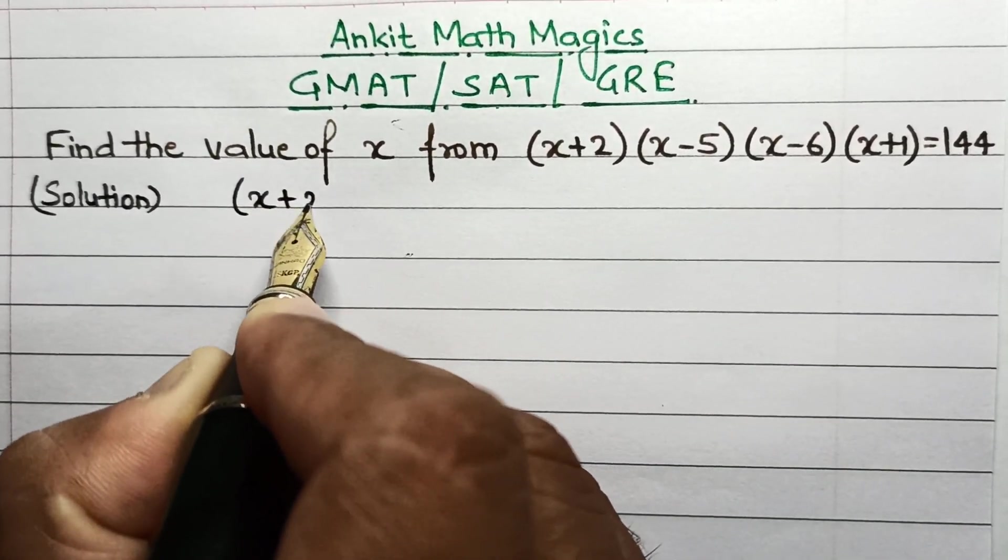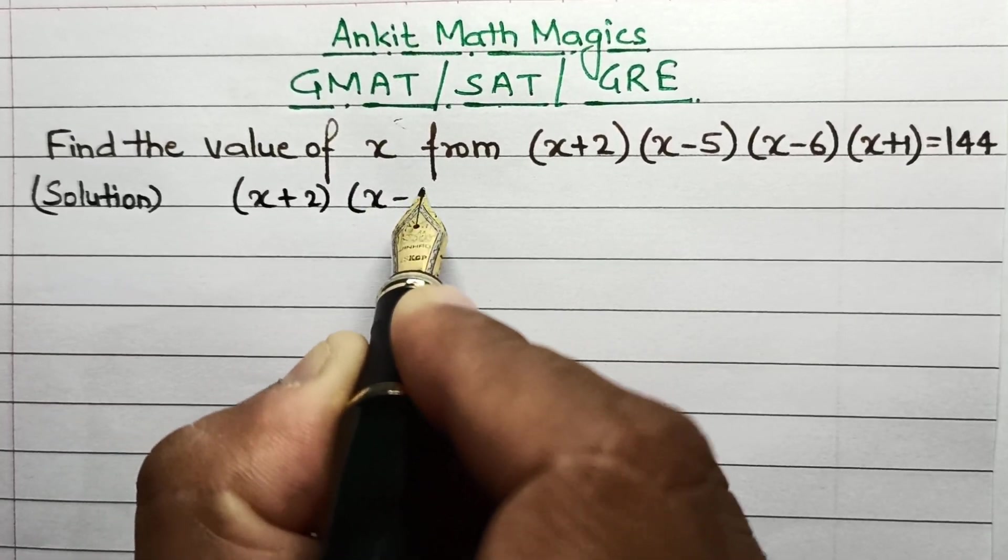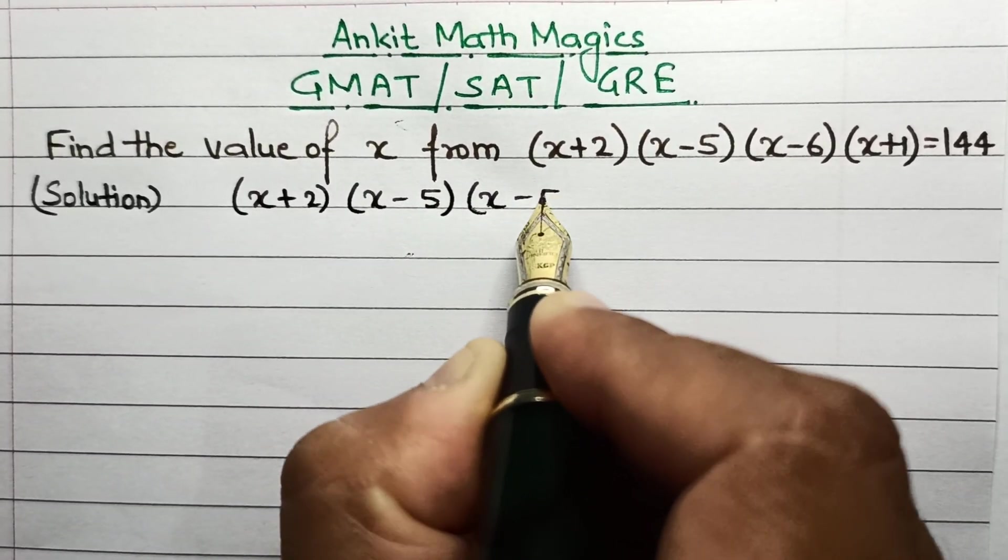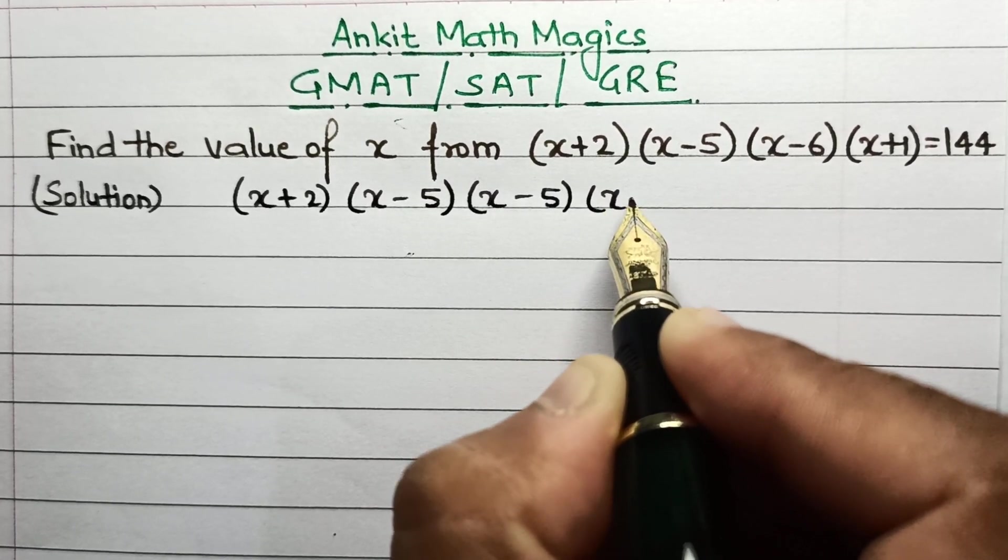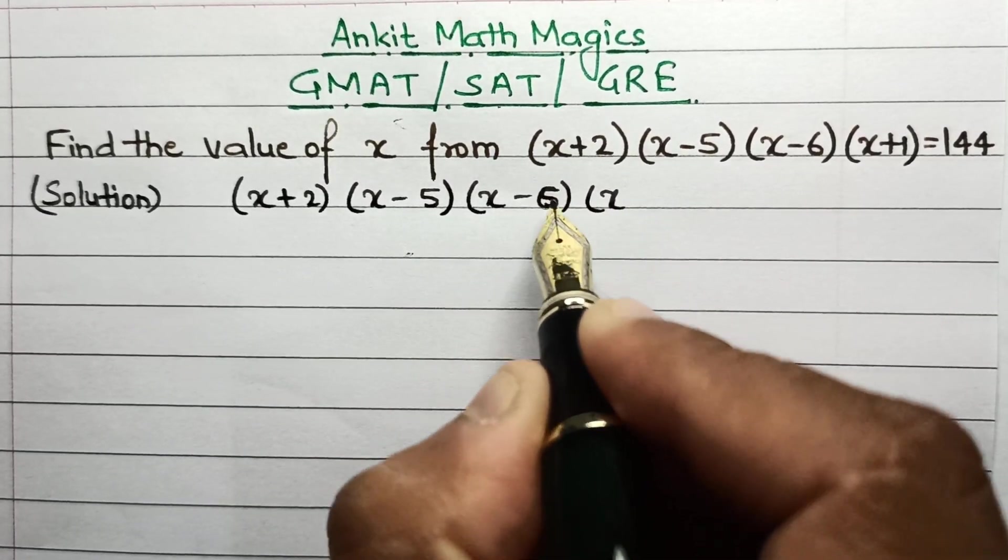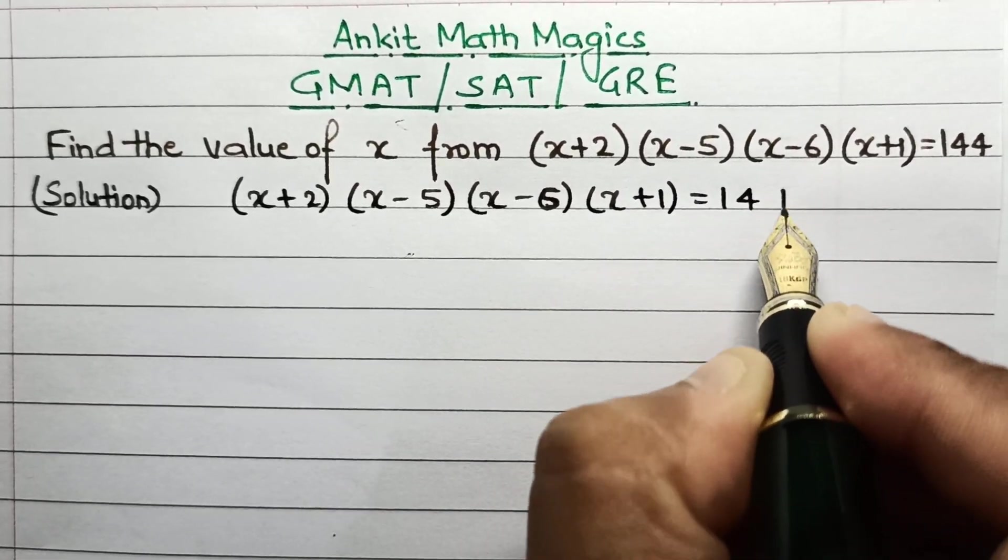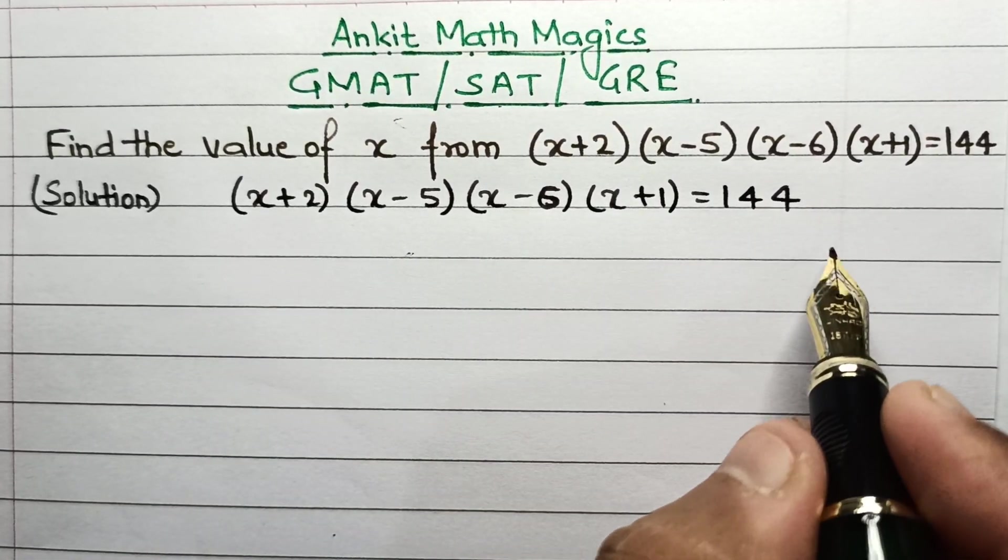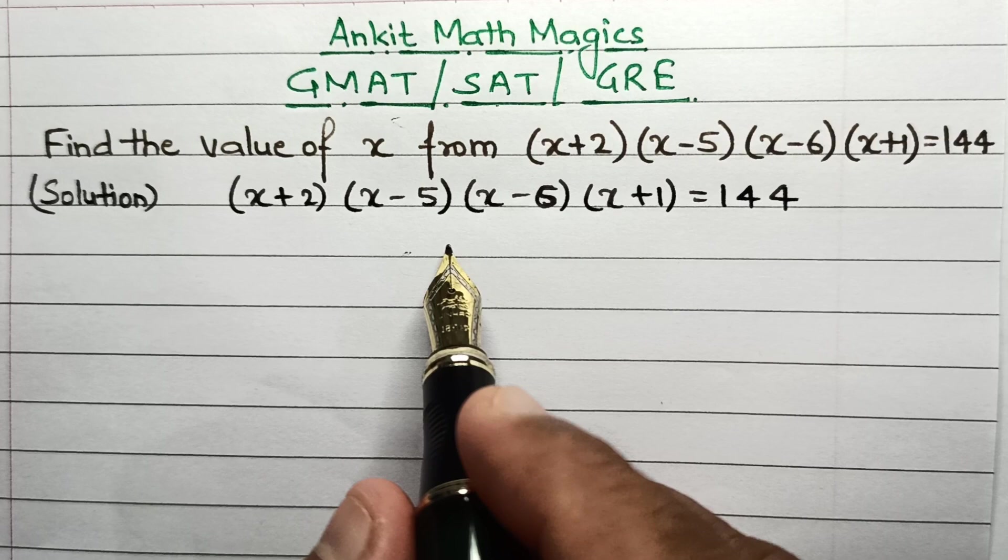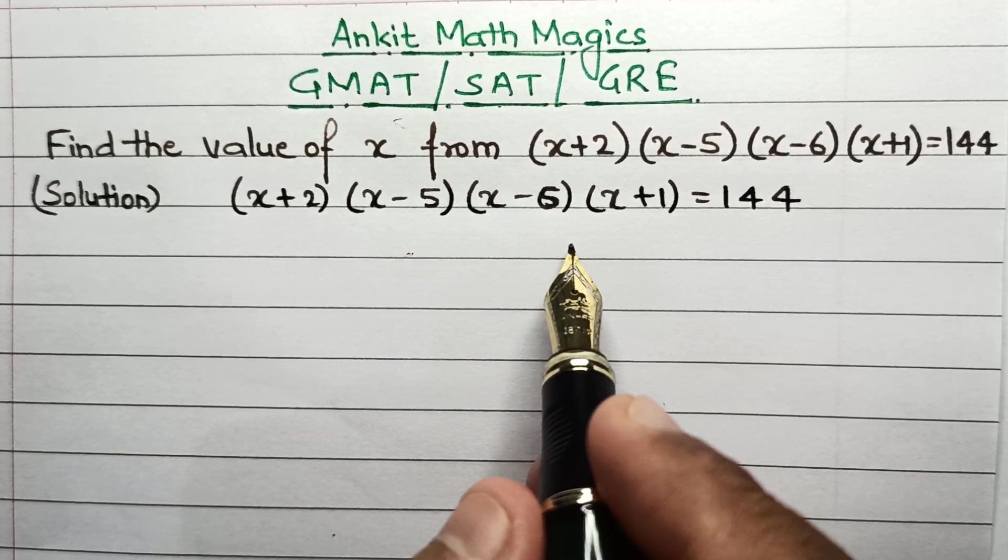Now the main challenge in these kinds of problems is that if we go by the sequential order, this would be really difficult to solve because this will end up in the power of 4—this is a biquadratic equation.